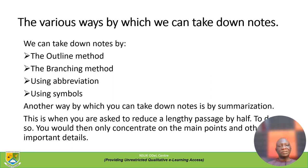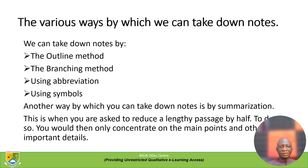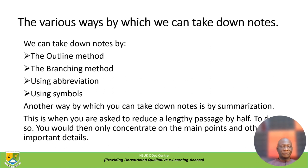There are several ways by which we can take down notes — up to about four ways. We can take down notes by the outline method, by the branching method, by using abbreviation, and by using simple notes. Another way is by summarization, which is when you are asked to reduce a lengthy passage by half. To do so, you concentrate only on the main points and all the important details.